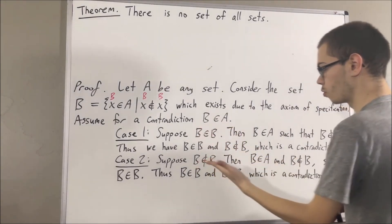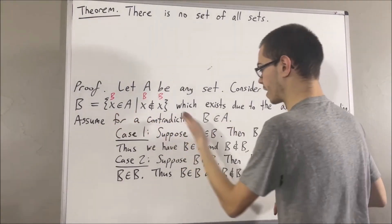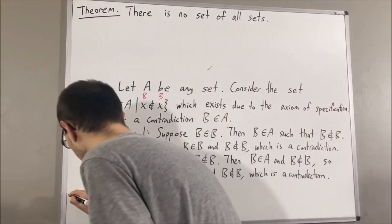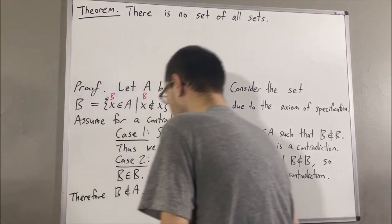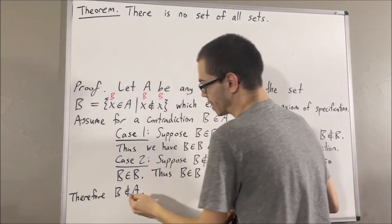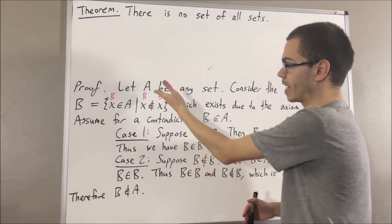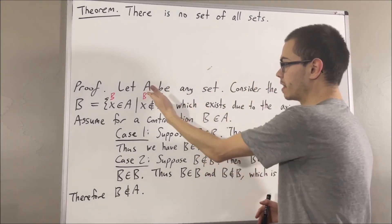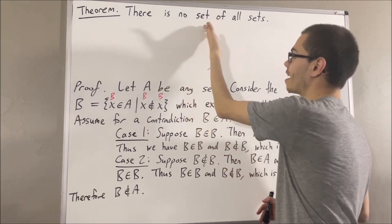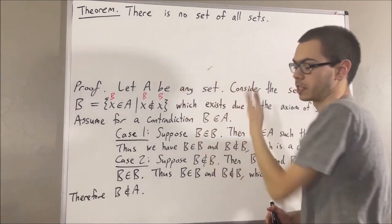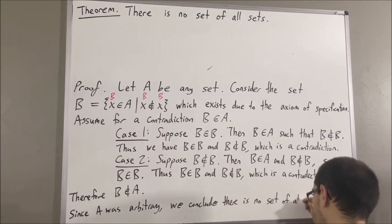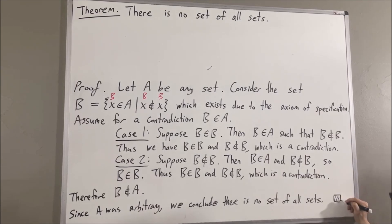So in either case, we reach a contradiction. Our assumption that B is an element of A led us to a contradiction, so we must instead have that B is not an element of A. We have shown that if A is any set, then there exists a set that is not contained in A, so A is not a set of all sets. Since A could be any set, every set is not a set of all sets — so there is no set of all sets. This completes the proof.